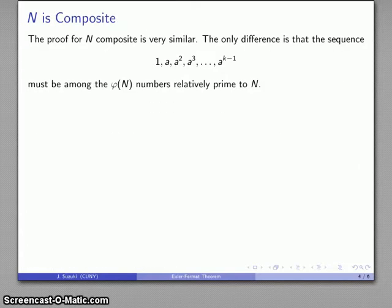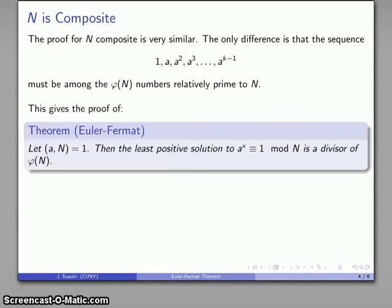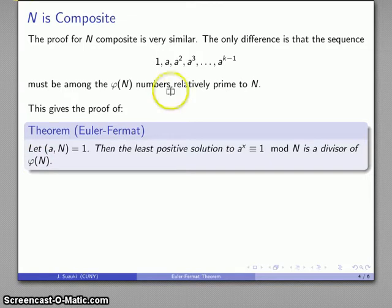Now let's consider what happens if n is composite. Once you have the proof for n prime, the composite case is very similar. The only difference is that the sequence must include only numbers that are relatively prime to n — there are φ(n) such numbers. The same argument applies: either the sequence includes all numbers relatively prime to n, or we multiply by a missing one and repeat. Altogether, the least positive solution to a^x ≡ 1 mod n must be a divisor of φ(n).